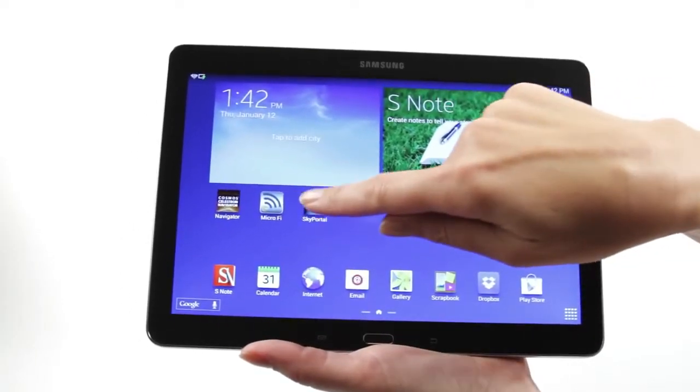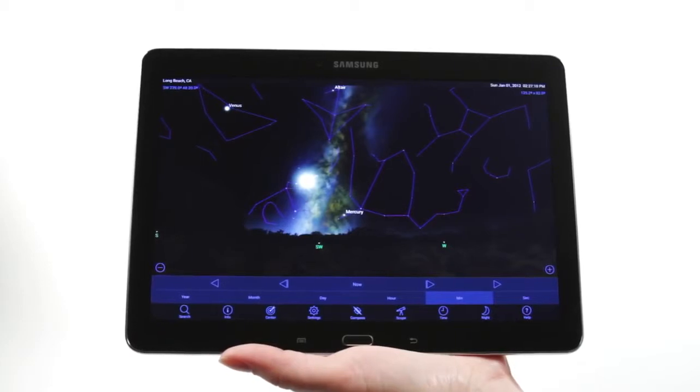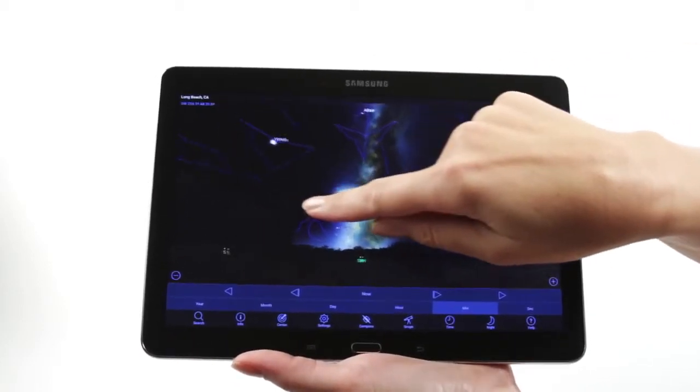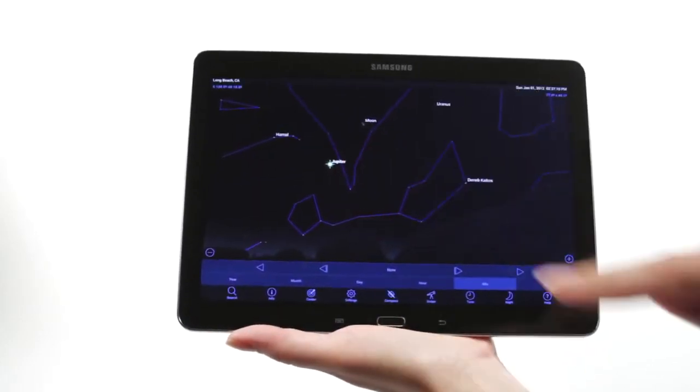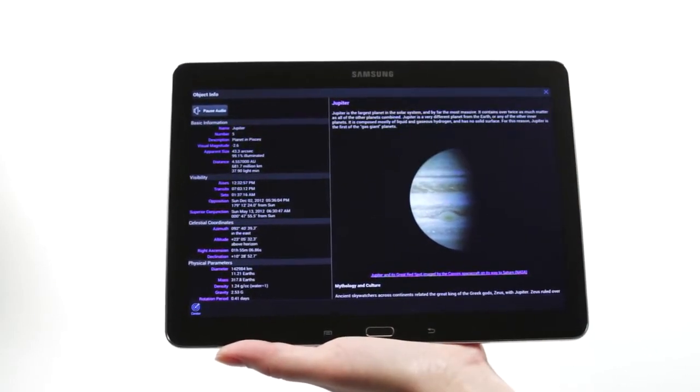When you're out under the stars, use Celestron's free SkyPortal mobile app for iOS and Android to locate objects in the night sky. As you observe, listen to SkyPortal's audio descriptions for the most popular objects. Happy stargazing!